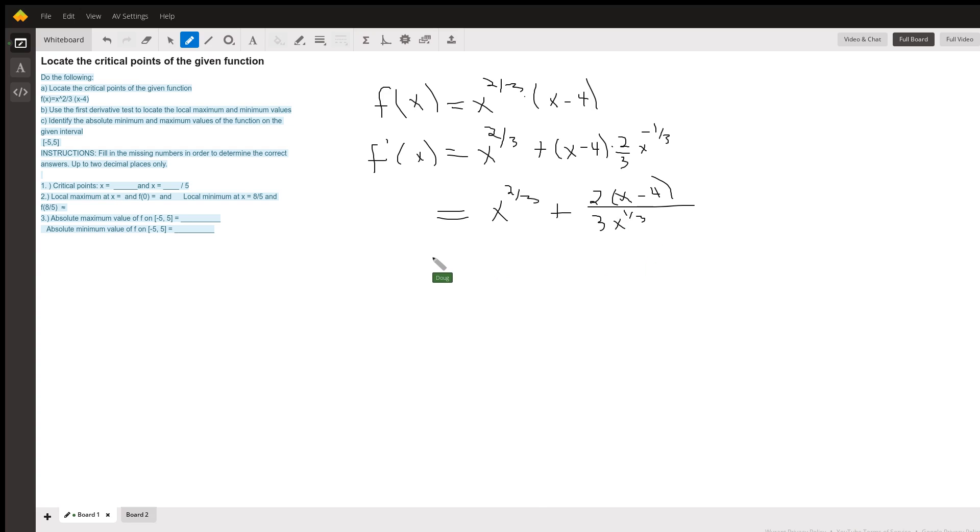And now if I get a common denominator, I can combine the fractions. We'll have to multiply top and bottom in this first fraction by 3x to the one-third. So if you picture that, 3x to the one-third.